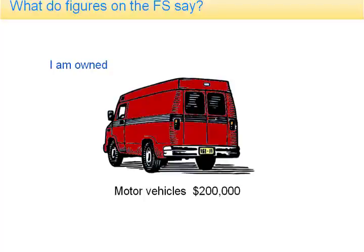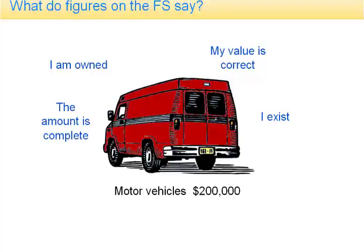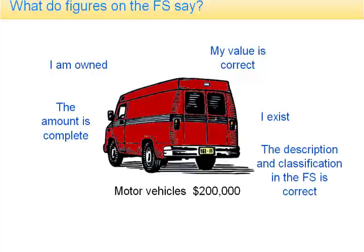It actually means a number of things. It's saying that the company owns the motor vehicles, that the value of the motor vehicles is correct, that the motor vehicles exist, that the amount at which they're stated is complete, and that the description and classification in the financial statements is correct — for example, that they are motor vehicles and not plant and equipment. So $200,000 cannot be seen as a single statement; it means a number of different assertions or proclamations. The very fact that the $200,000 is printed in the statement of financial position against the heading motor vehicles is proclaiming all of that, and the auditor has to find evidence for each of these.